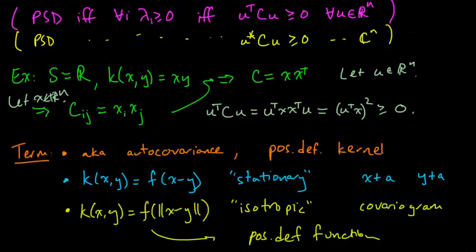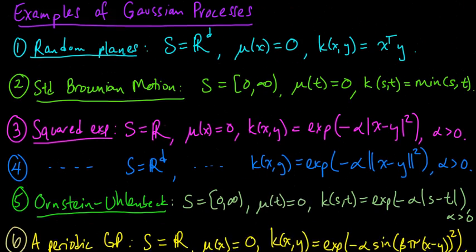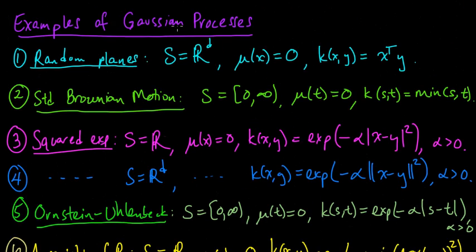And it turns out that inner products are in some sense a canonical form of positive semi-definite kernel. So the very first example, way back up here, the very first specimen of Gaussian process that we examined was this random plane's Gaussian process. And this one was just when we took S to be d-dimensional real space, this vector space, and we defined our kernel to be x transpose y. Just the dot product of x with y, or in other words, the inner product of x with y.